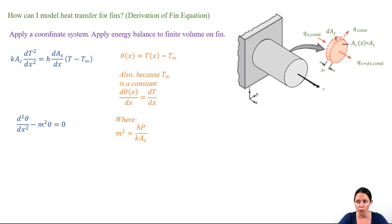And then substituting this in and defining m as h p over k ac, where ac is the cross-sectional area, we see that we have a second order linear homogeneous differential equation with constant coefficients. The general solution to this is in the exponential form.